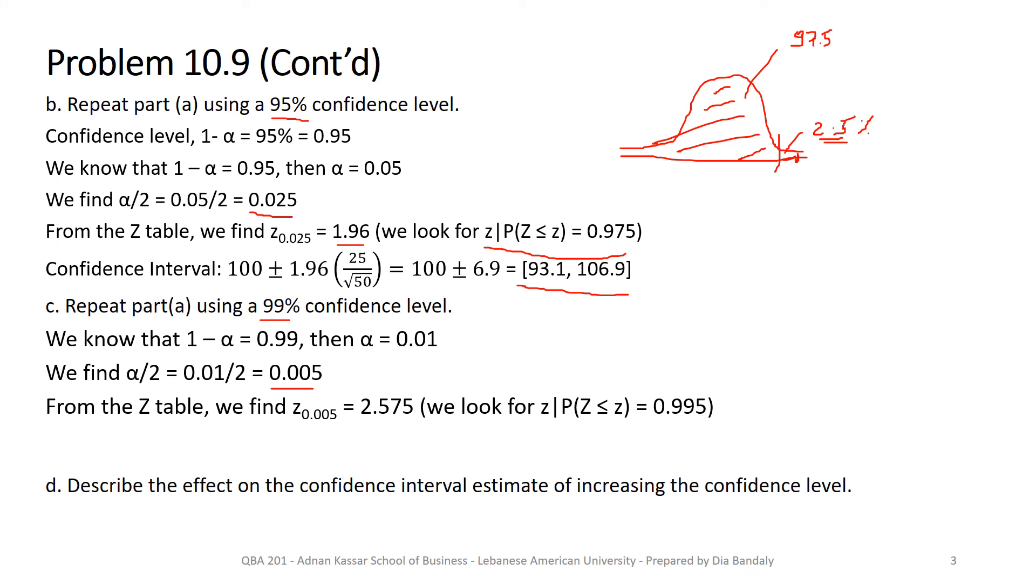So in fact, here we look for a z value such that it has an area on its left to be equal to 0.995, almost all the area, because the right hand side is 0.5% only. And we read it in the table and this will be 2.575. So you plug it in and you find our new confidence interval.